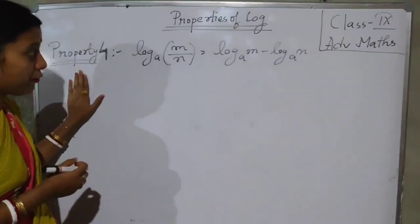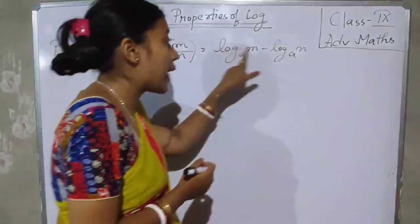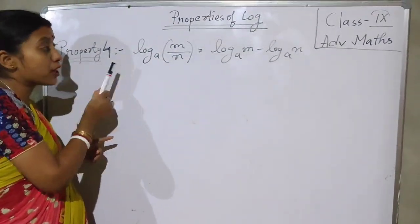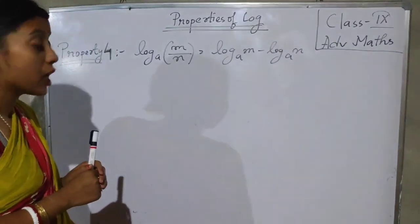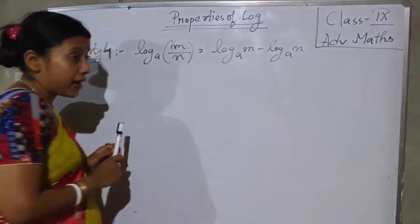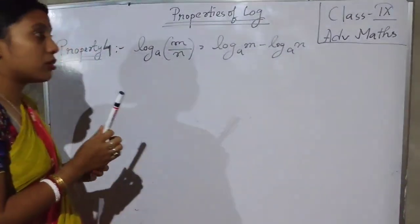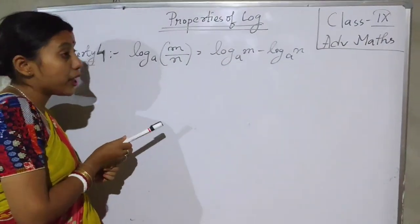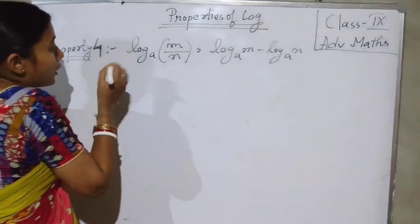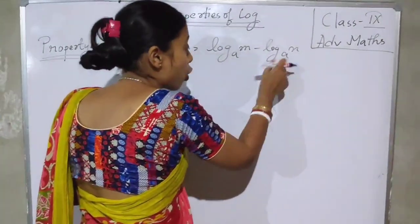Now property 4: log M divided by N base A is equal to log M base A minus log N base A. Properties 3 and 4 are similar to the properties of exponents — when it is multiplication, the powers are added; when it is division, the powers are subtracted. Same for log also. Now let's prove it: log M divided by N base A equals log M base A minus log N base A.